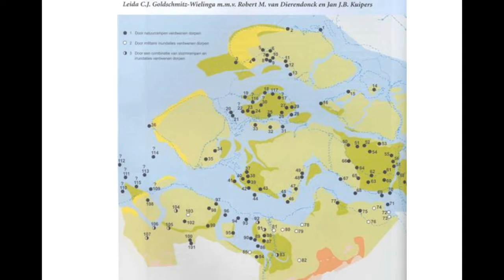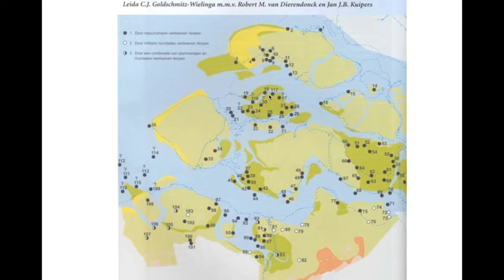This is a map I like to show of drowned church villages in Zeeland. All the black ones with numbers — 36, 114, 44, 31, 1, etc. — those are all villages that disappeared by a natural disaster. All the villages in dark black have been flooded away and taken by the sea. The sea has played a major role in this area of the Netherlands.